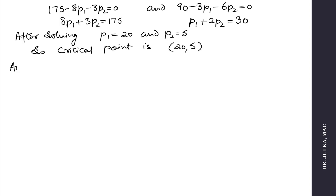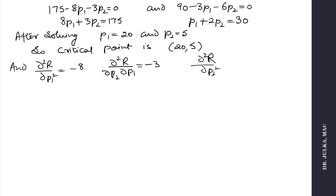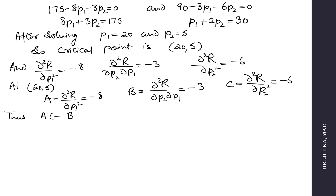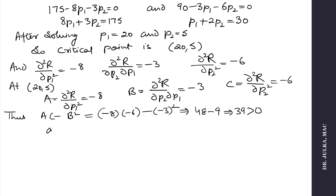We calculate the second derivative with respect to p1, which is minus 8, the mixed second derivative with respect to p1 and p2, which is minus 3, and the second derivative with respect to p2, which is minus 6. At (20, 5) we get a equals minus 8, b equals minus 3, and c equals minus 6. Thus ac minus b² equals (minus 8)(minus 6) minus (minus 3)² which equals 39, which is positive, and a is negative.